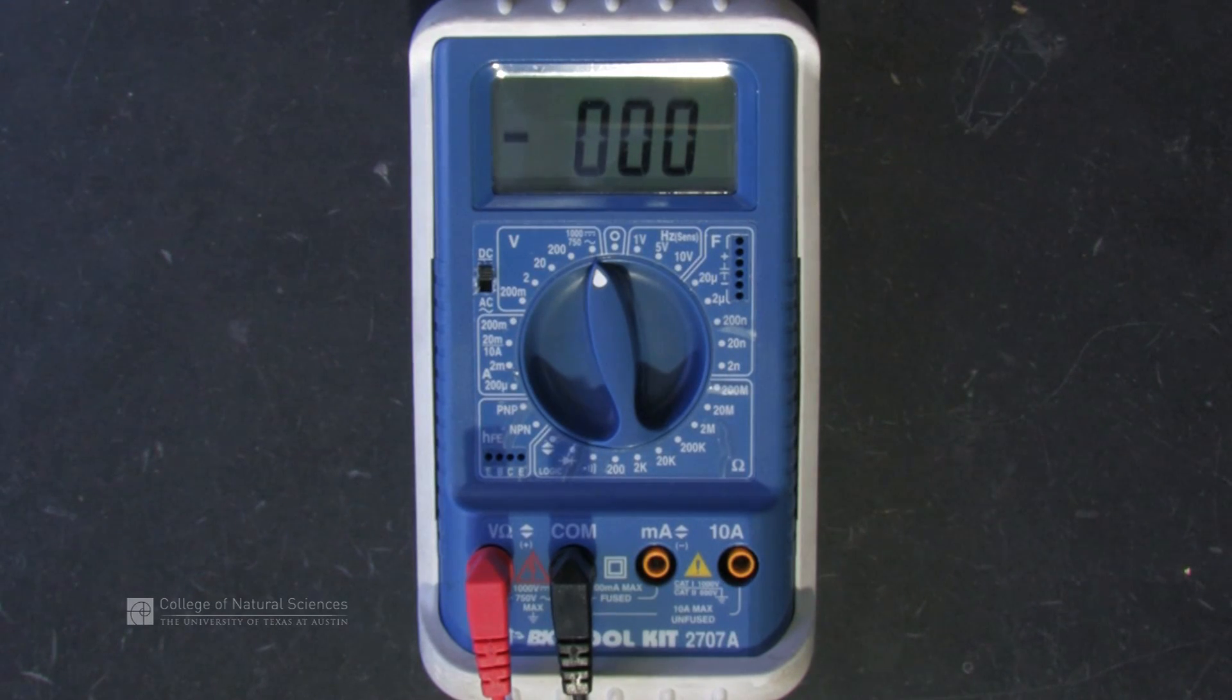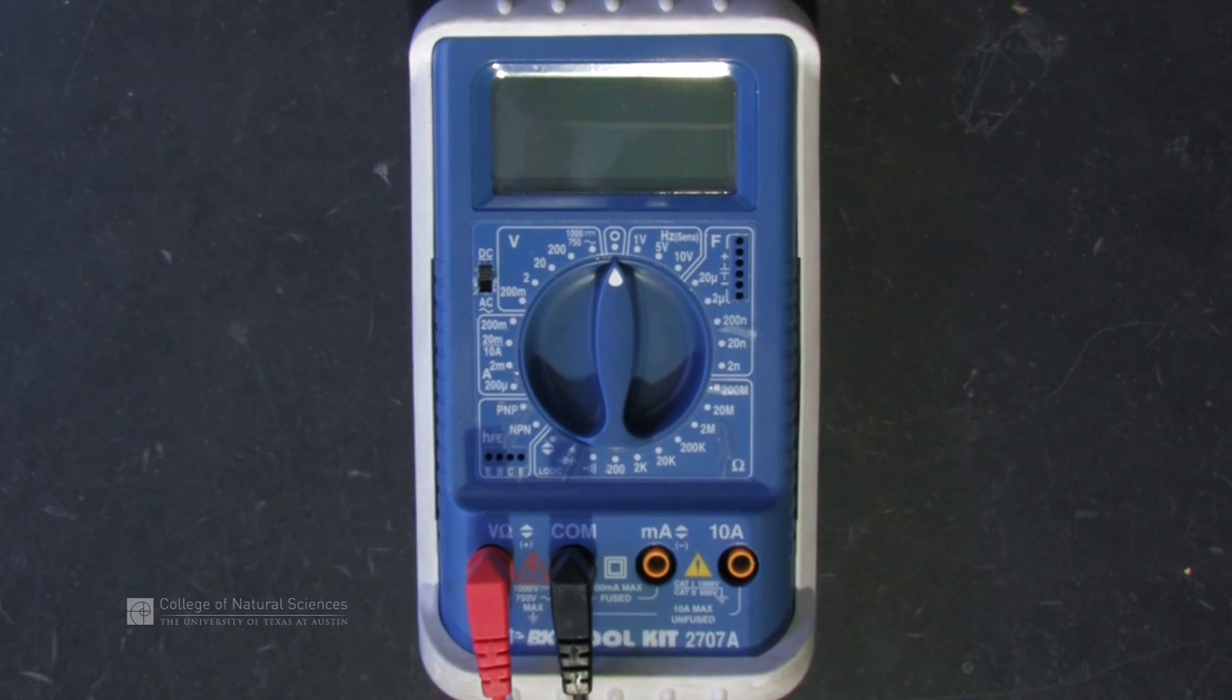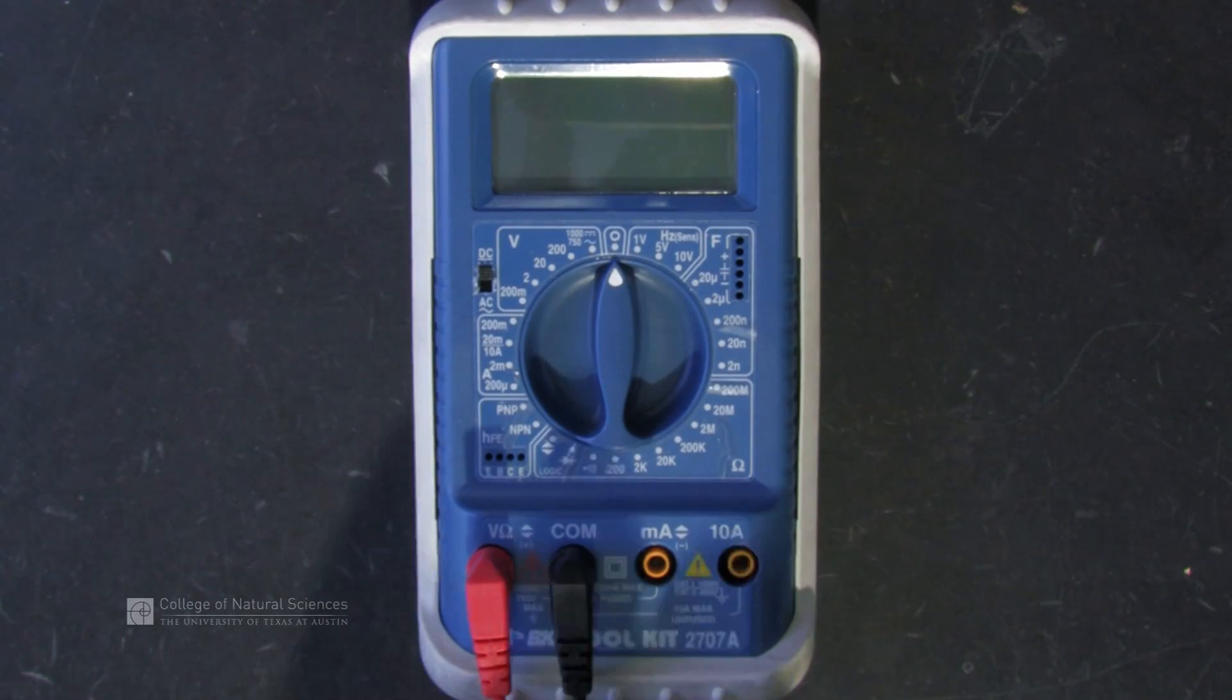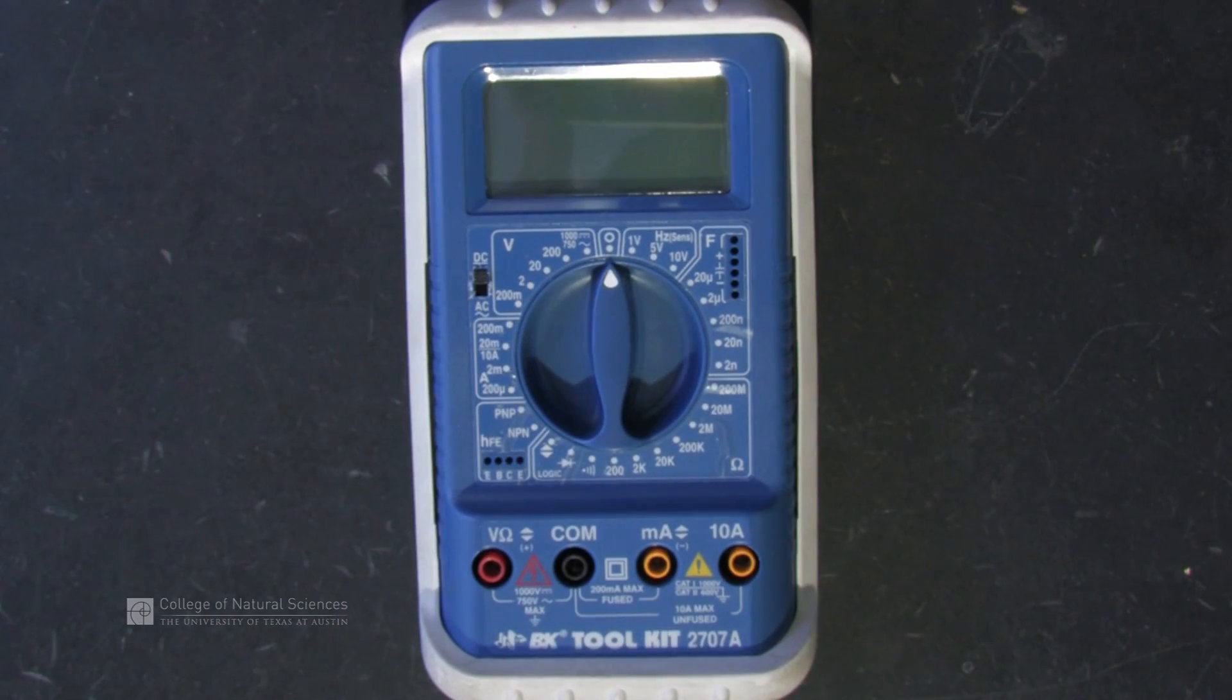And finally, when you're done with your multimeter, switch it to the off position. Make sure that the display turns off. Unplug your probes and put everything in your supply box so you can return it to the supply window.